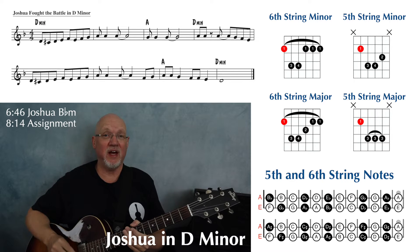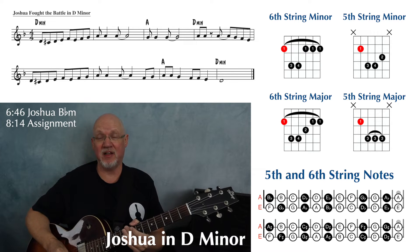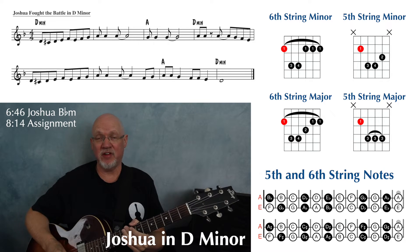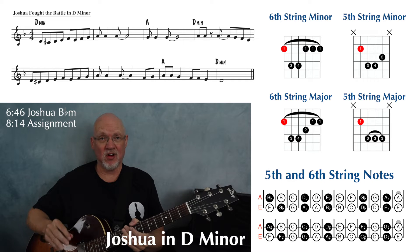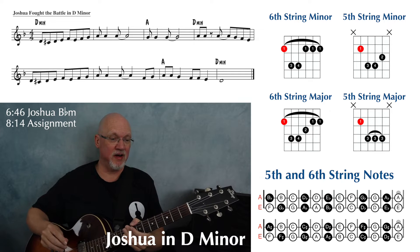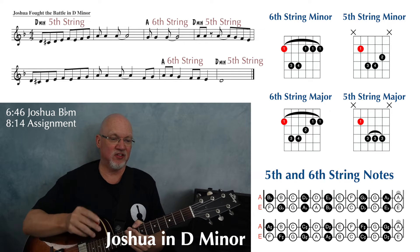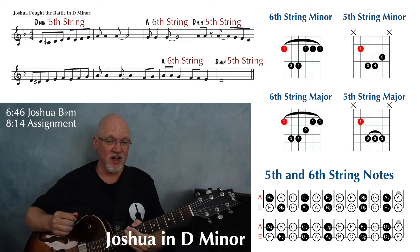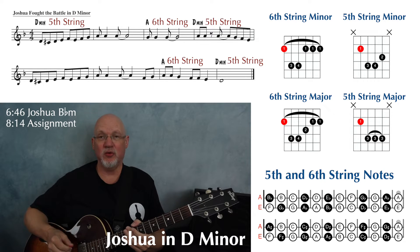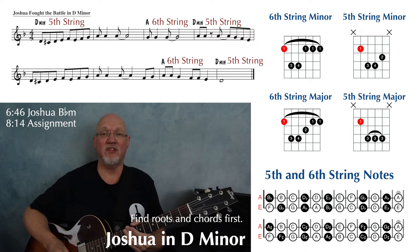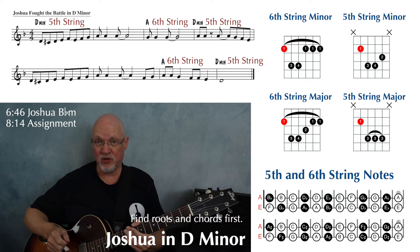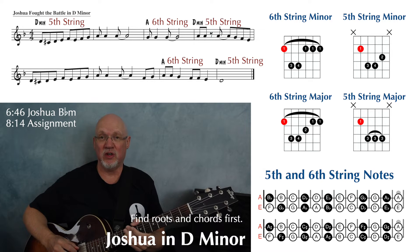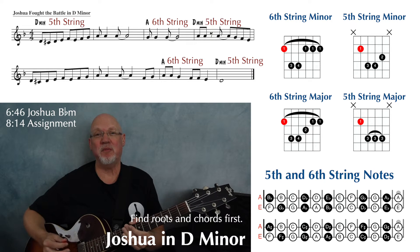At the bottom of page four, we have two versions of Joshua Fought the Battle of Jericho — one is in D minor, one is in B flat minor — and both of these combine the minor shapes on this page with major shapes from page three. Let's take a look at the D minor version first. There's an instruction above it to play the D minor chords with the root on the fifth string and your A major chords with your root on the sixth string. Our process is to first find our root notes, just like in the chord finder, then figure out what chord shapes go along with them, and then play the song.